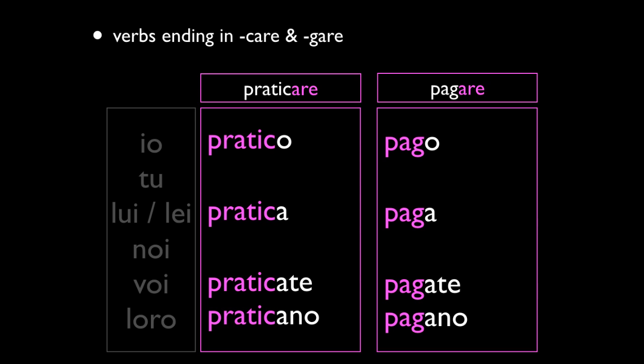Take these verbs that end in CARE and GARE — here are the couple of model verbs with their regular conjugations. You form the conjugation as usual by taking off the ARE part of the verb. What happens, however, when you conjugate normally? You would go from PRATICO, and then in the TU form you would add an I, and that would end up being pronounced PRATICI. But if you go back to the infinitive, you have PRATICARE with a hard C sound.